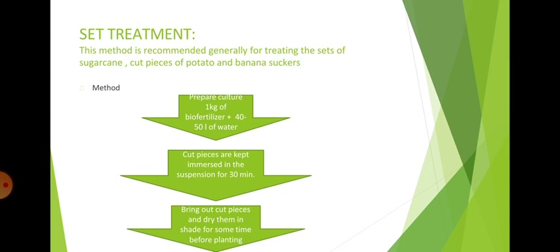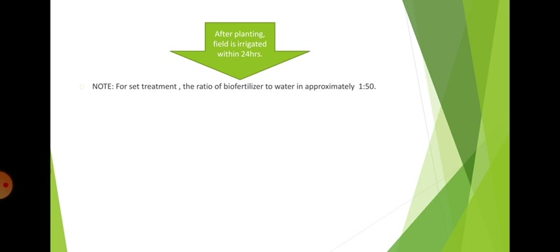Set treatment is recommended generally for treating the sets of sugarcane, cut pieces of potato, and banana suckers. The method is: prepare a culture of one case of biofertilizer plus 40 to 50 liters of water. Cut pieces are kept immersed in the suspension for 30 minutes, then removed, dried in shade for some time before planting. After planting, the field is irrigated within 24 hours. Note that for set treatment, the ratio of biofertilizer to water is approximately 1:50.